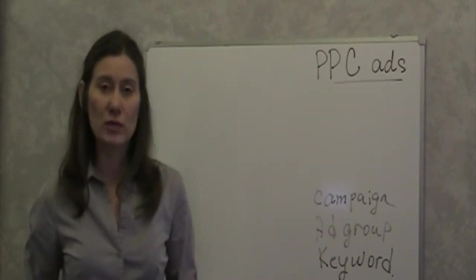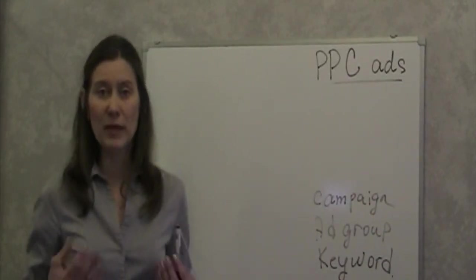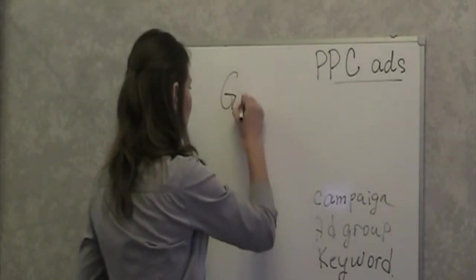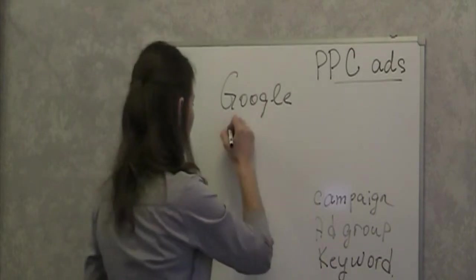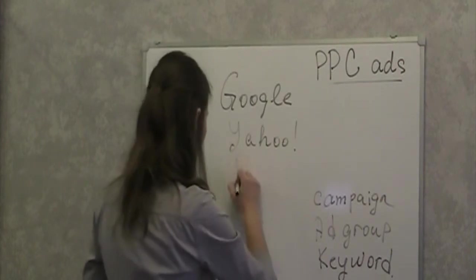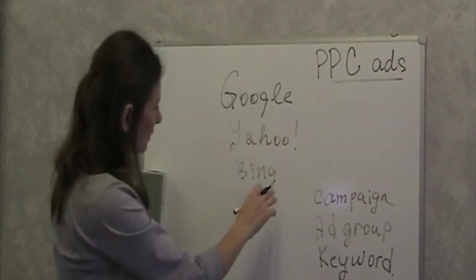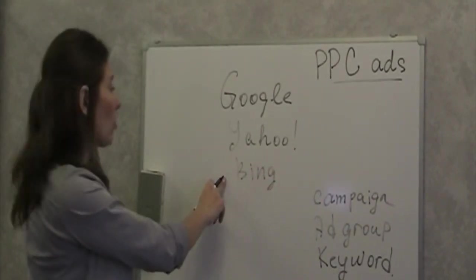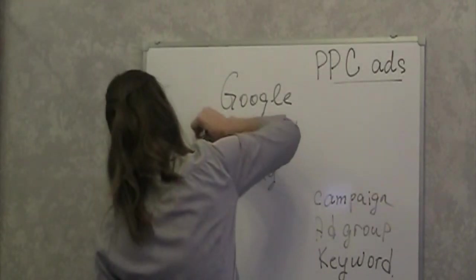Then you will choose a search engine platform where your ad will be displayed. You can choose Google AdWords, or you can choose Yahoo PPC or Bing Ads. Actually Yahoo and Bing go together to compete with Google — they form the Yahoo-Bing network.